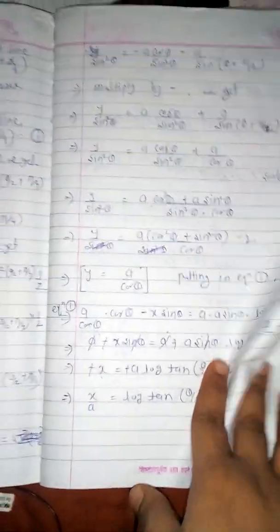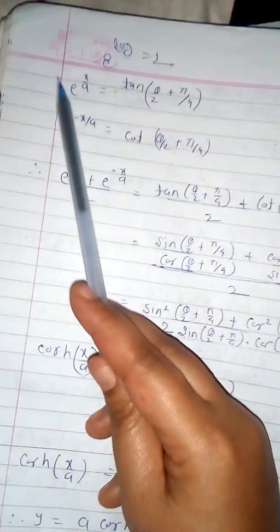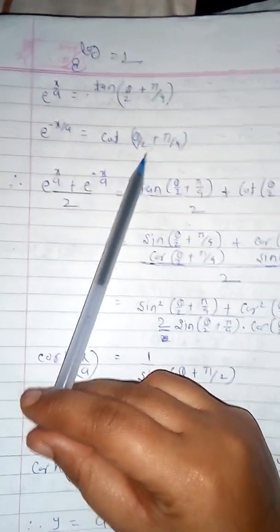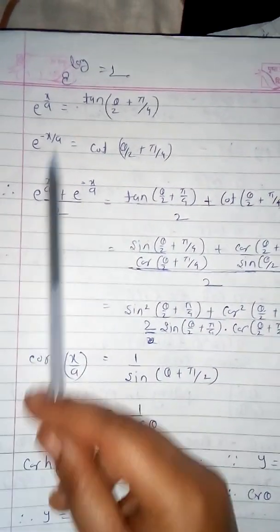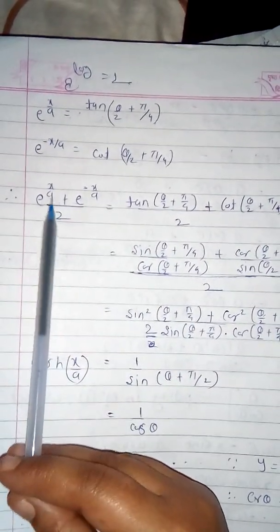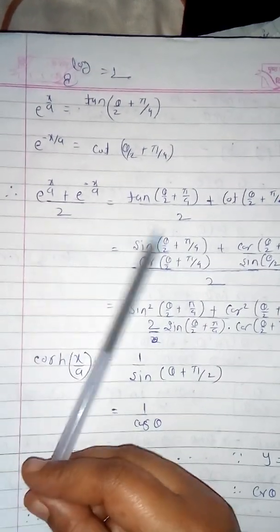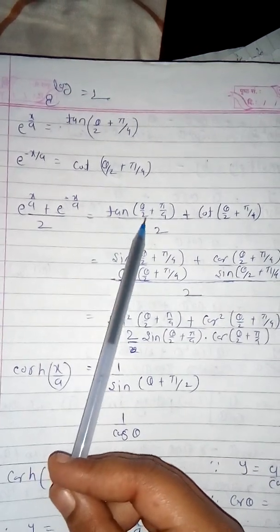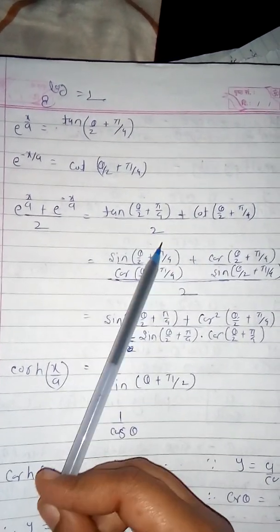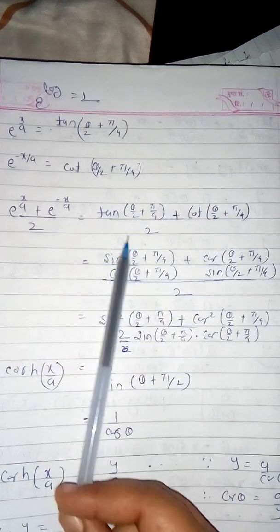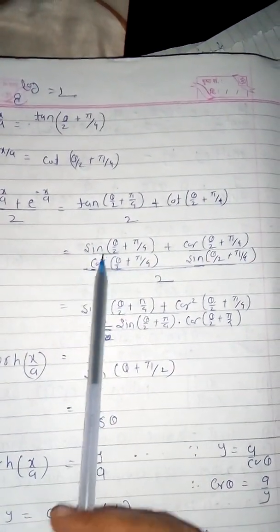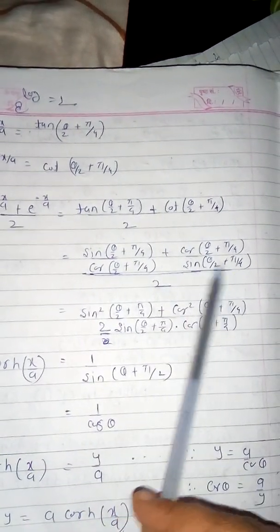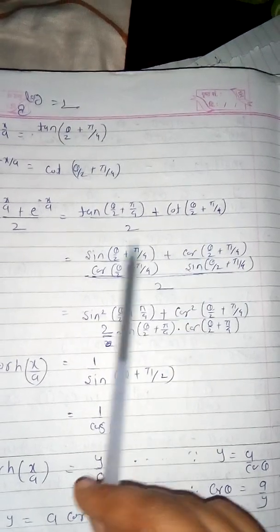To remove the log, we exponentiate: e^(x/a) = e^(log(tan(θ/2 + π/4))) = tan(θ/2 + π/4), since e^(log u) = u. Similarly, e^(−x/a) = cot(θ/2 + π/4). Adding these: [e^(x/a) + e^(−x/a)] / 2 = [tan(θ/2 + π/4) + cot(θ/2 + π/4)] / 2.